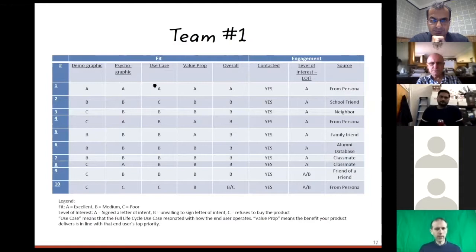The source is matching persona level interest high. That's obviously very high signal there. But if you look at some of the rest of them, you can see some sources here: school friends, neighbors, family, friends, classmates, alumni, friend of the friends. What do you think is happening here?